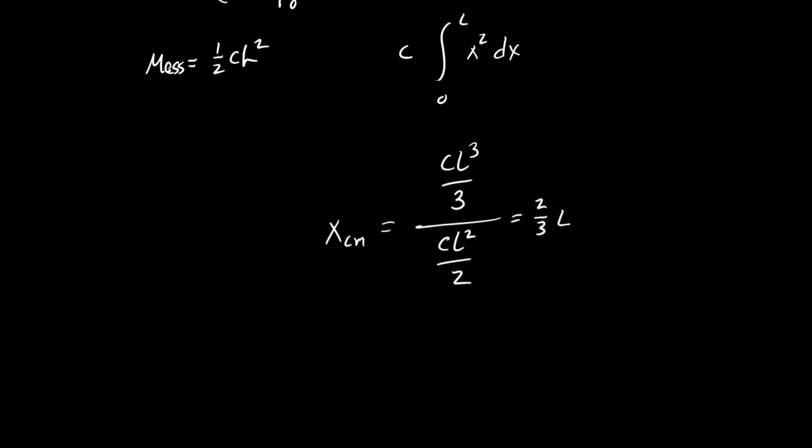That makes reasonable sense — it's somewhere between zero and L, and it's towards the heavy side. It might bother you that C didn't appear in the answer. I would have expected something that gets denser faster to show up in the center of mass. The reason it doesn't is because that same C was used to compute the mass, so since both the mass and the center of mass are based on C, it cancels out. The answer is in appropriate units — two-thirds of a length.